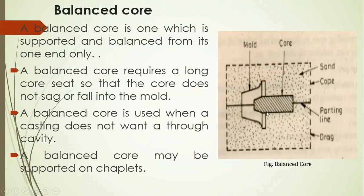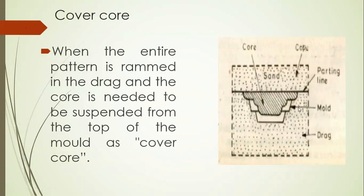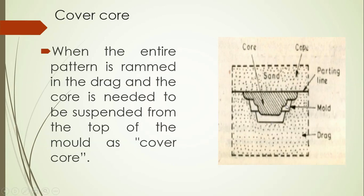The next type is the cover core. This core will cover the mold cavity from its top, which is why it is called a cover core. The hatching line is the core, which is placed above the mold cavity and covers the complete portion of it. The cope is the upper molding part of the flask, the drag is the lower molding part, and the parting line is the imaginary line separating cope and drag. The white colored portion is the mold cavity made using the pattern. This core covers the total mold cavity, which is why it is called a cover core.